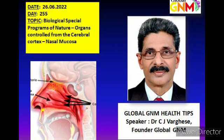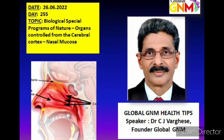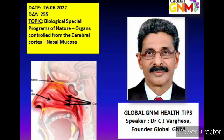Now let us consider the brain-level control of the nasal mucosa. It is controlled from the sensory cortex of the cerebral cortex. Here again there is the crossover correlation from the brain to the nasal mucosa — that means the nasal mucosa of the right side is controlled from the left sensory cortex, and that of the left side is controlled from the right sensory cortex of the cortical hemispheres.